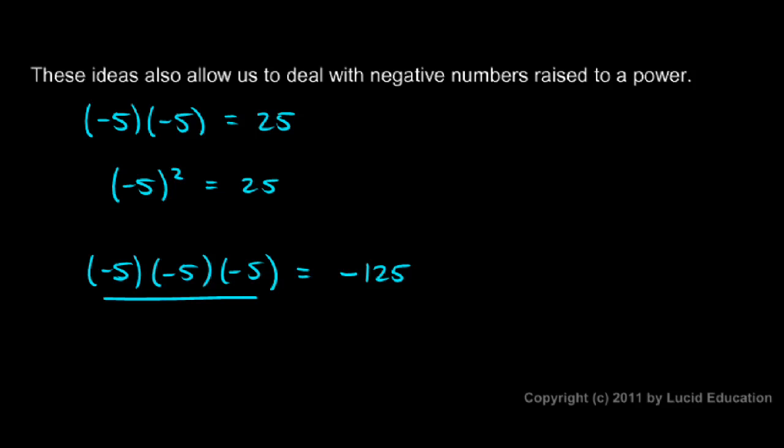But this, negative 5 times negative 5 times negative 5 can be written as negative 5 cubed, because that's what cubed means. That means three of these multiplied together. So that three in the exponent means three of these, which means there are three negative signs. And that makes the result negative. That's why we had the negative sign there. So this is negative 125.